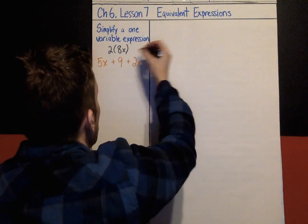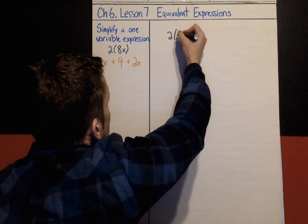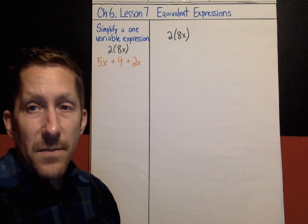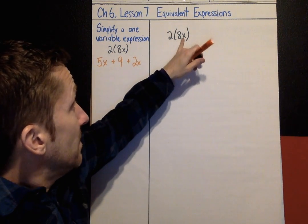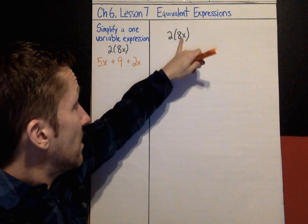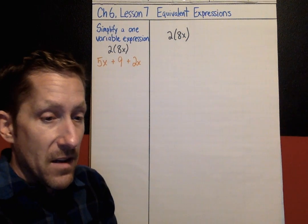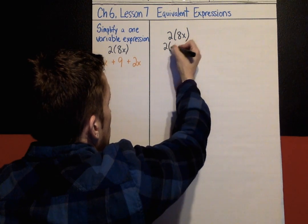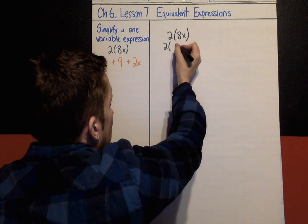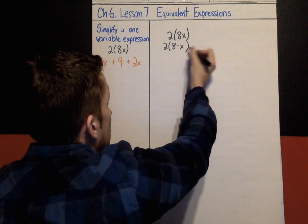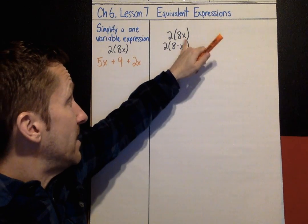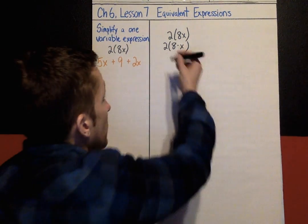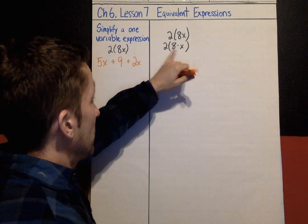The first one — 2 times 8x. Remember, a number right next to a parenthesis means they're being multiplied, and 8 with a variable right next to it — a coefficient and a variable — they're being multiplied together as well. So I could rewrite this expression as 2 times 8 dot x. All I did was rewrite it; it's just a different way of showing multiplication.